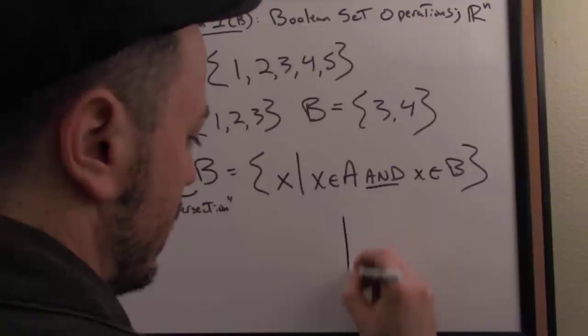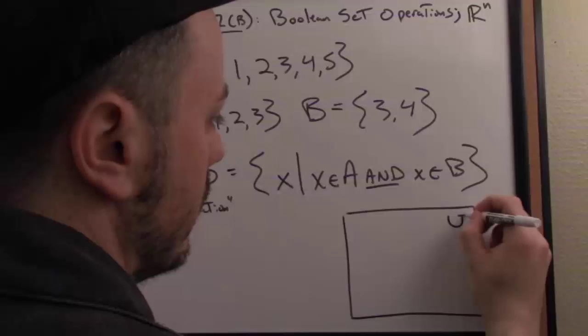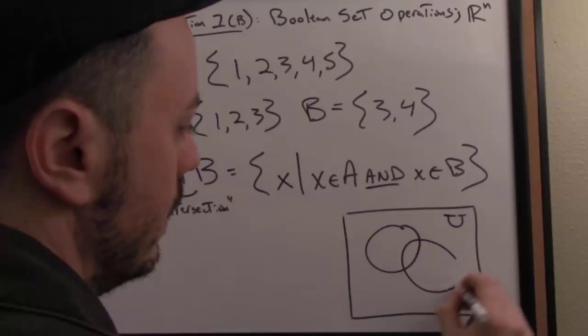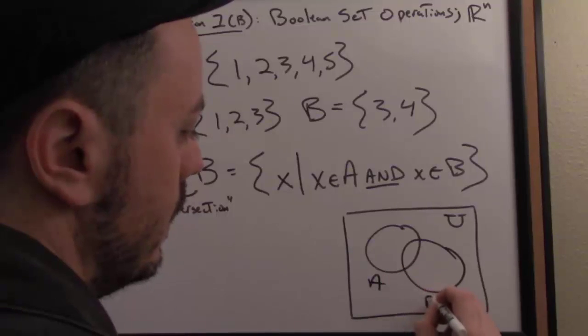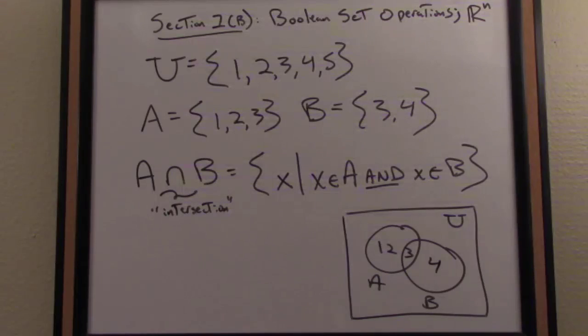So we can once again capture that idea with a simple Venn diagram. So we're in our universe here. We have our set A. Once again, we have our set B. A consisting of 1, 2, and 3 in the overlap. B consisting of just 3 and 4.